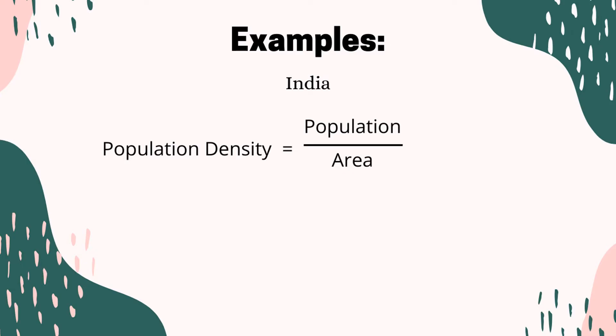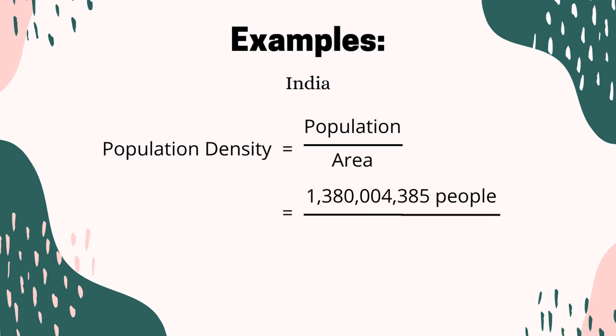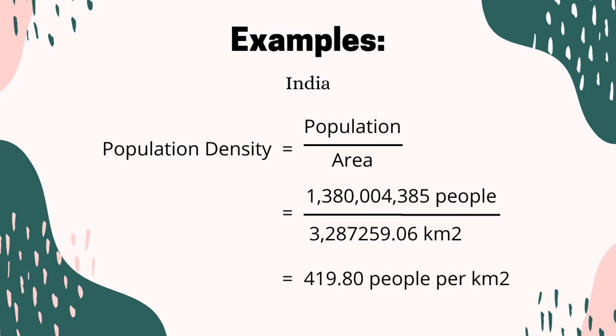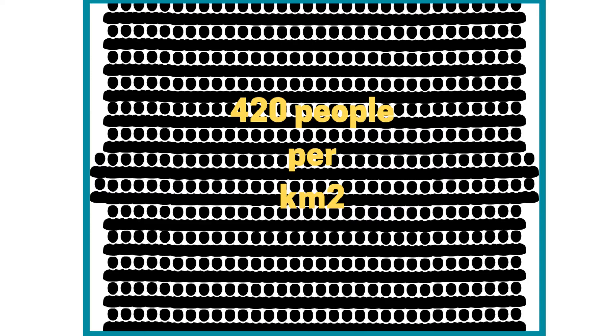Let's practise some population density calculations. The first country we will look at is India. The latest data for India gives a population of 1,380,485 people, divided by an area of 3,287,259.06 square kilometres. Putting that in our calculator gives an answer of 419.80 people per square kilometre — let's round that up to 420. Can you imagine having 420 people within one square kilometre? That is the average population density of India.